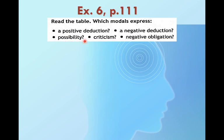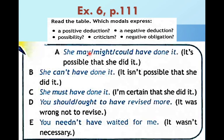Possibility — возможность. Criticism — какая-то критика. Negative obligation — отсутствие каких-то обязательств, то есть нет какого-то долга или должествования. OK, let's work with the sentences. She may / might / could have done it — здесь нам в каждом предложении будут даваться подсказки, чтобы понять предысторию и контекст.